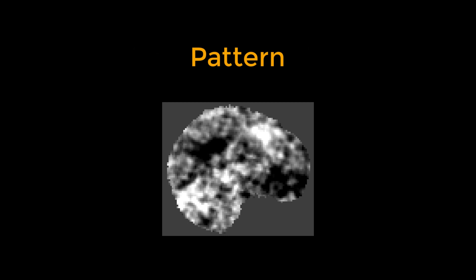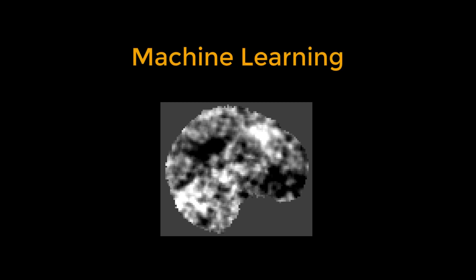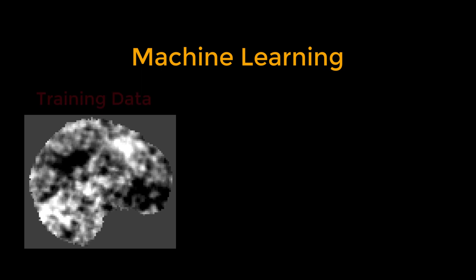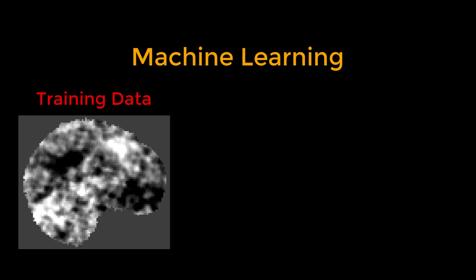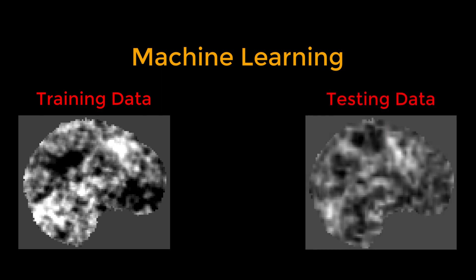This is the question behind machine learning. We use data to train a classifier, which is called training data. The classifier is then provided with new data, also known as testing data, and it judges which category the testing data belongs to.